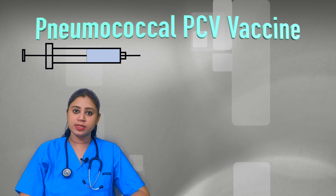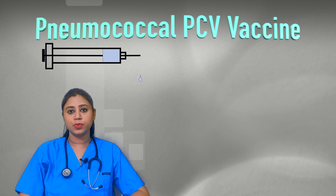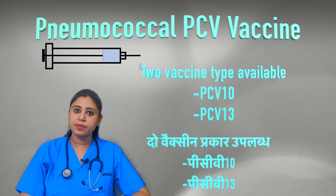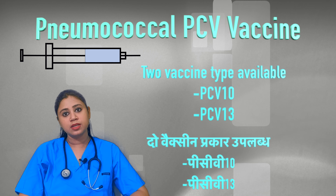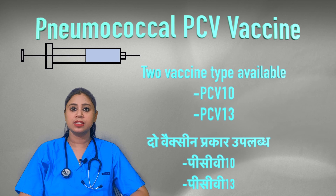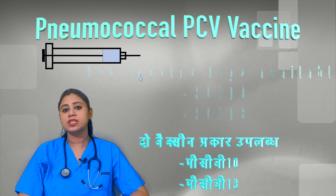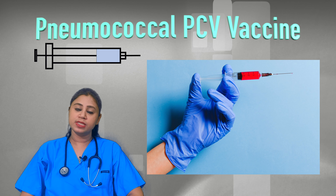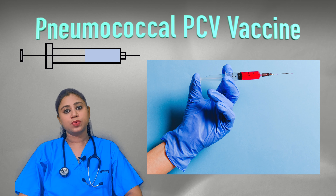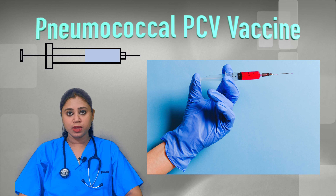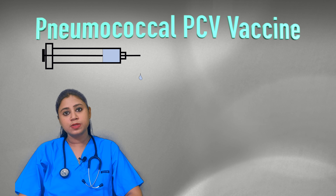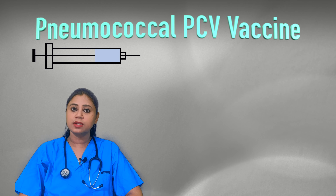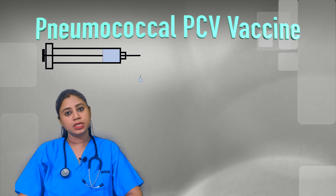There are two Pneumococcal Conjugate Vaccines available: PCV-10 and PCV-13. Both cover different serotypes of pneumonia. Both are available through the government routine immunization program free of cost. In the private sector, these vaccines are expensive, costing around 3,000 rupees, so we encourage you to avail them free from the government.